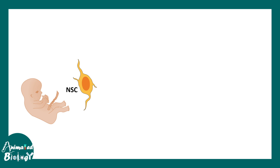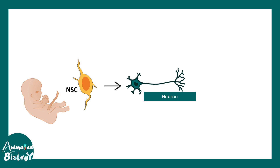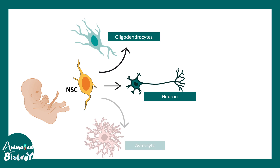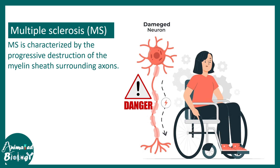During development, neural stem cells can eventually give rise to neurons, astrocytes, and oligodendrocytes. Internal and external signals trigger the formation of oligodendrocytes in a sequential fashion.